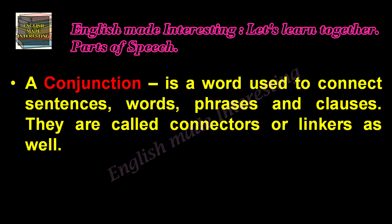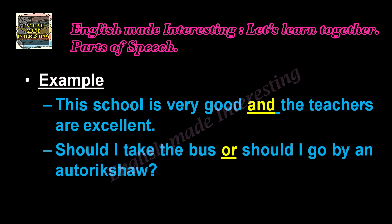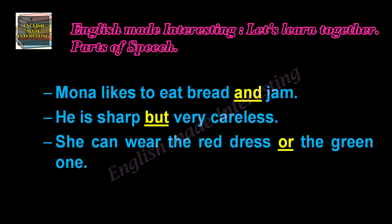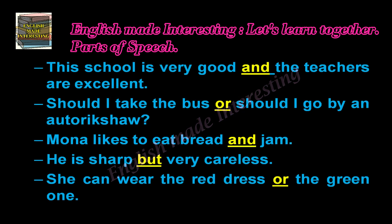Now what's a conjunction? A conjunction is a word used to connect sentences, words, phrases, and clauses. They are called connectors or linkers as well. Examples: 'This school is very good and the teachers are excellent.' 'Should I take the bus or should I go by an auto rickshaw?' 'Mona likes to eat bread and jam.' 'He is sharp but very careless.' 'She can wear the red dress or the green one.' Here, and, or, but, etc. are the conjunctions used.